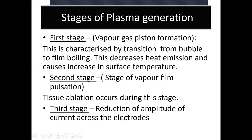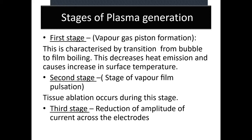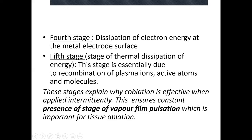The first phase is called the vapor gas piston formation stage, characterized by a transition from bubble to film boiling — this decreases heat emission. The second stage is vapor film pulsation — tissue ablation actually happens in this stage. The third stage involves reduction of amplitude of current across the electrodes, controlled by the console. The fourth and fifth stages are respectively dissipation of electron energy and thermal dissipation.